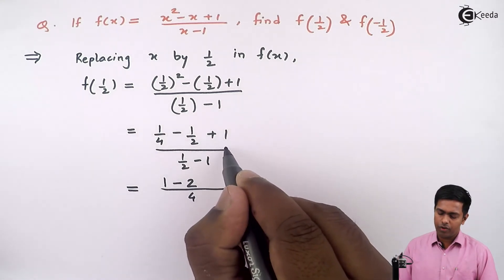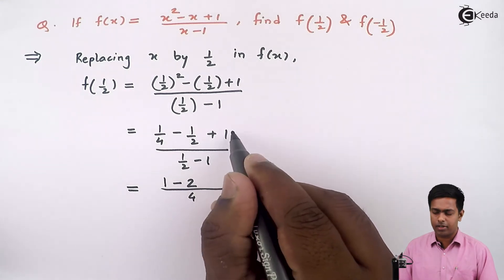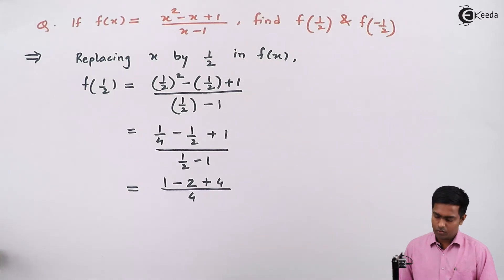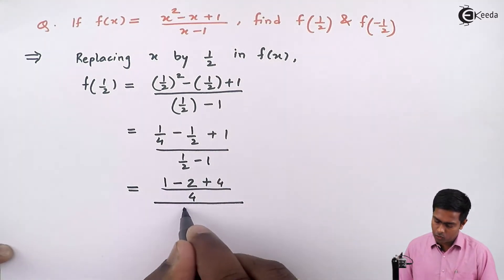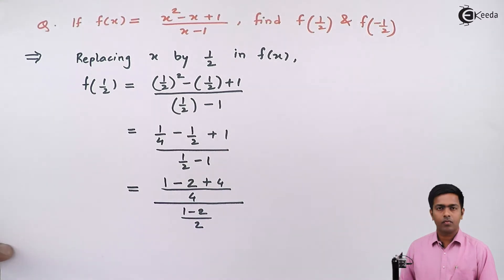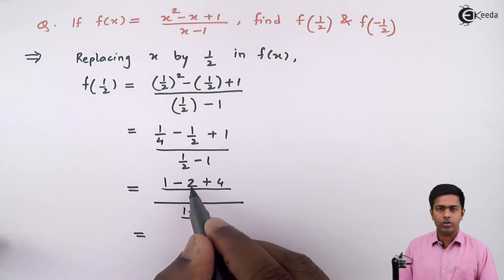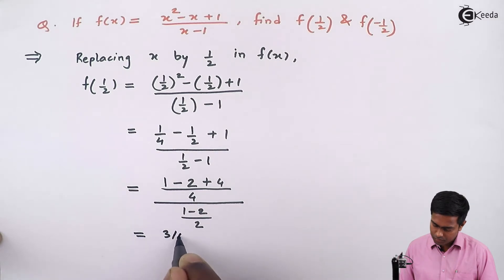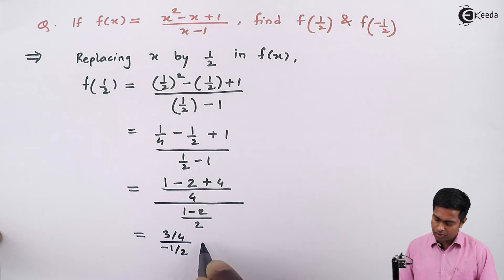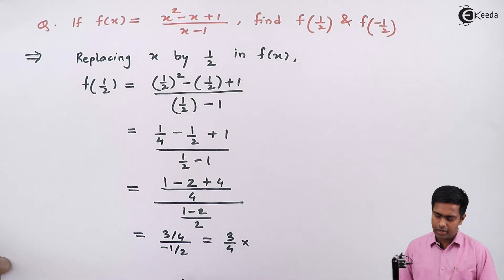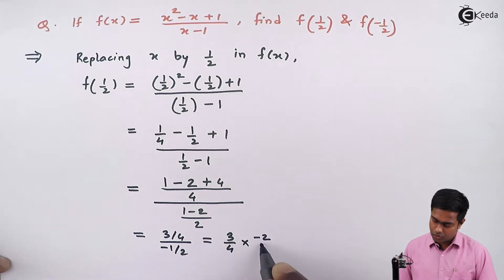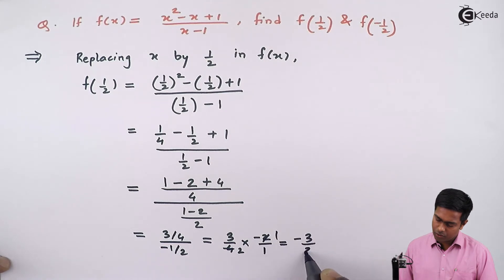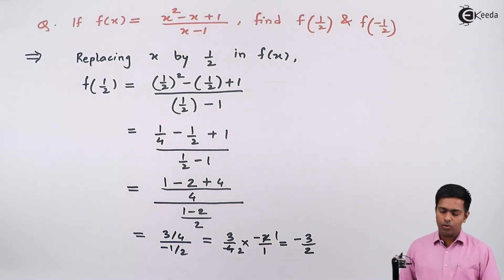Similarly, to get 4 we multiply the denominator by 4, hence we multiply the numerator by 4, so we get plus 4. Whole divided by 1 minus 2 upon 2. This gives us 1 minus 2, that is minus 1, plus 4, that is 3. So we get 3 by 4 upon minus 1 by 2. When we solve this, the division becomes multiplication and minus 1 by 2 becomes minus 2 by 1. So 2 twos are 4, giving us minus 3 upon 2. So this is the value of f of 1 by 2.